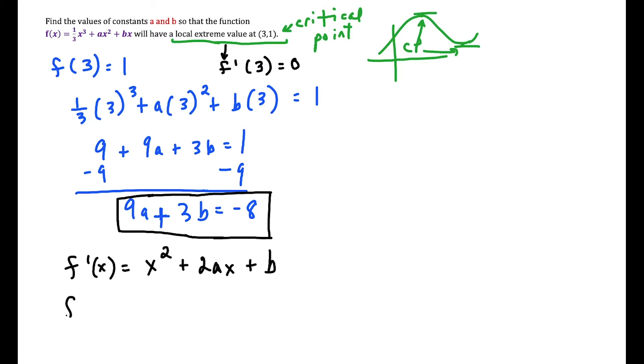So we can go ahead and plug in: f'(3) equals 3 squared plus 2 times 3 is 6, and we have an extra a term here, plus b, and this is once again all equal to 0. And if we work this out...